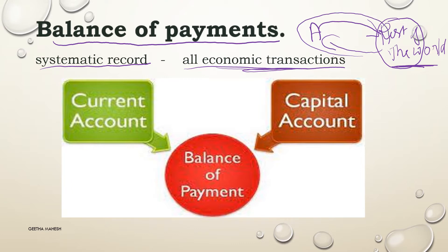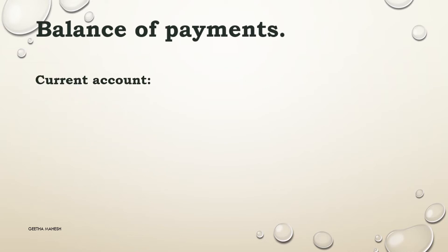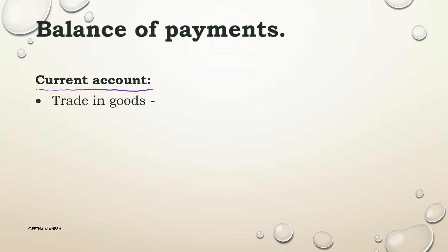Balance of Payment consists of different accounts. The current account and the capital account. The current account has three components.